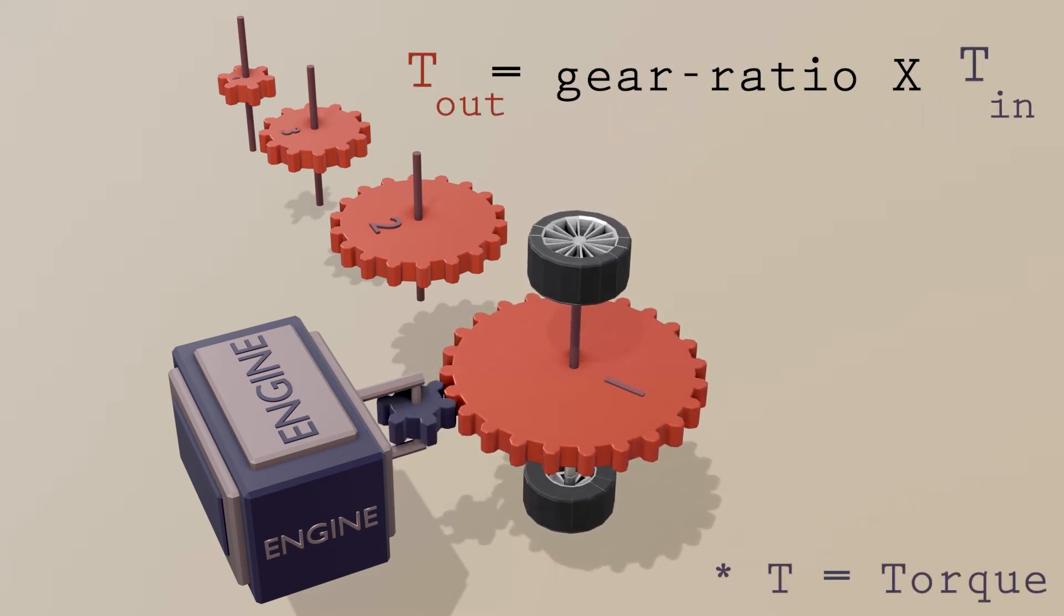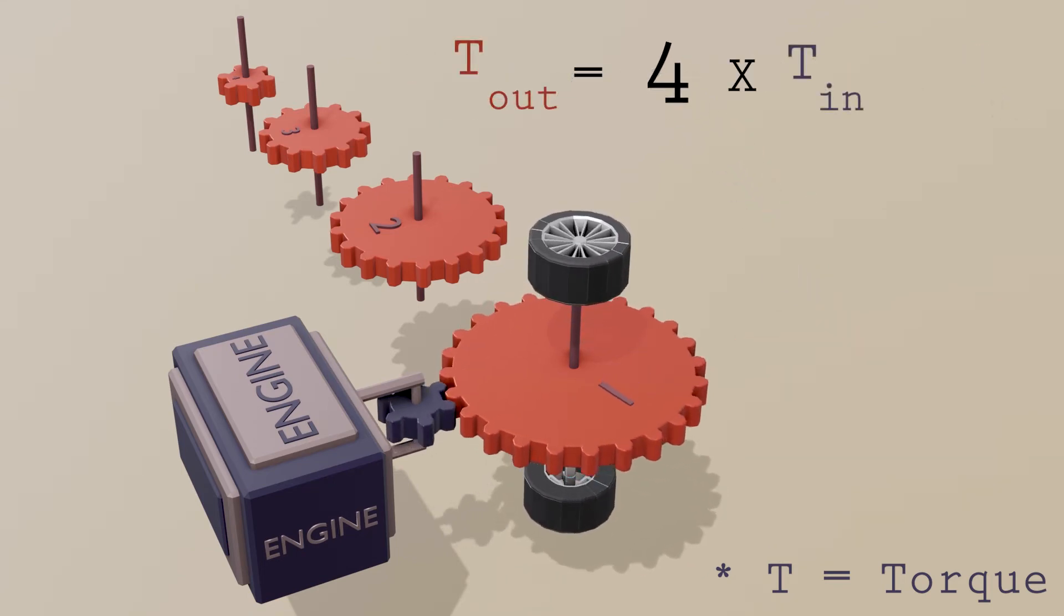The gear ratio can be calculated by dividing the number of teeth in the output gear by the input gear. Here the gear ratio is 4, so we get 4 times the torque on the wheels compared to the original torque from the engine.